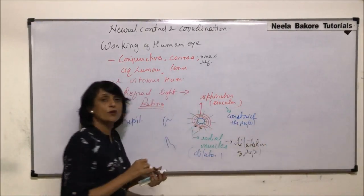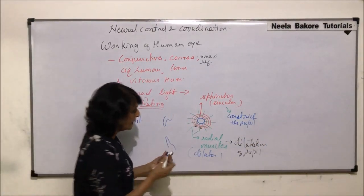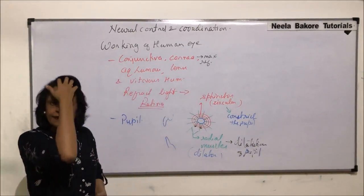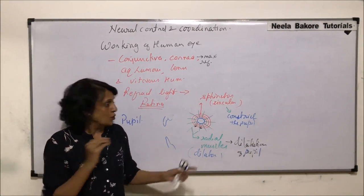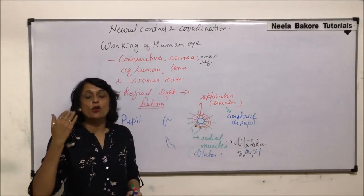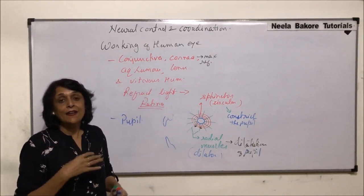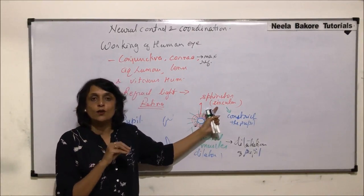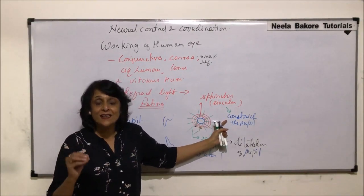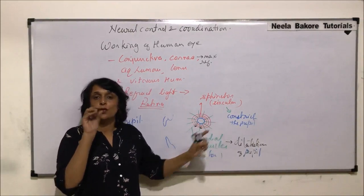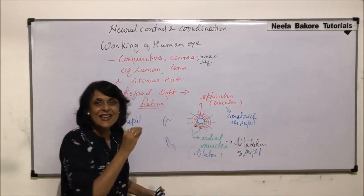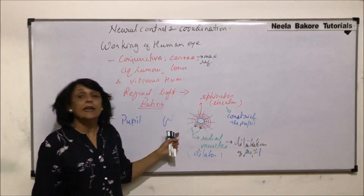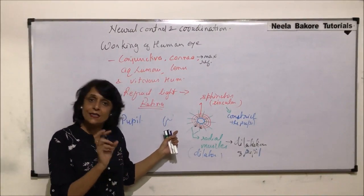The pupil dilates when the intensity of light is less, so the opening gets wider so that more and more light can fall on the retina. When the intensity is more, the sphincter muscles or circular muscles contract, and their contraction results in constriction of the pupil so that less and less light falls on the retina.